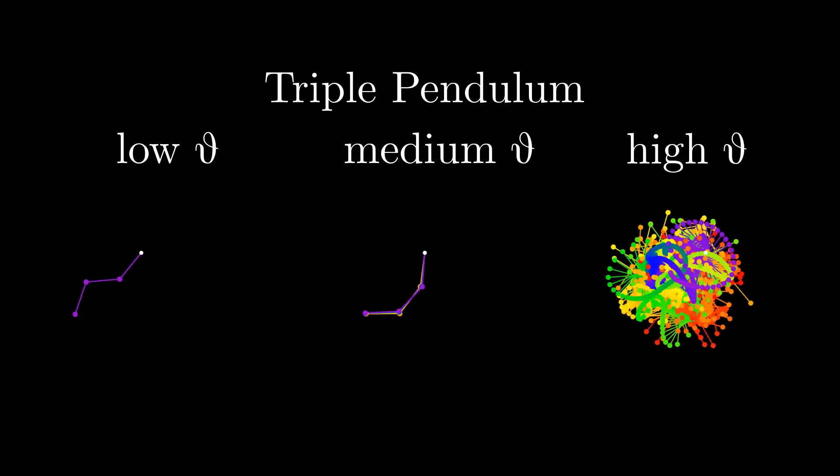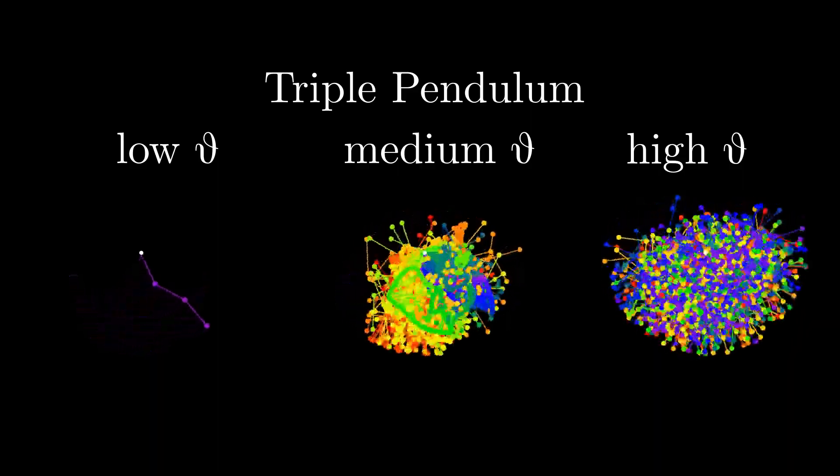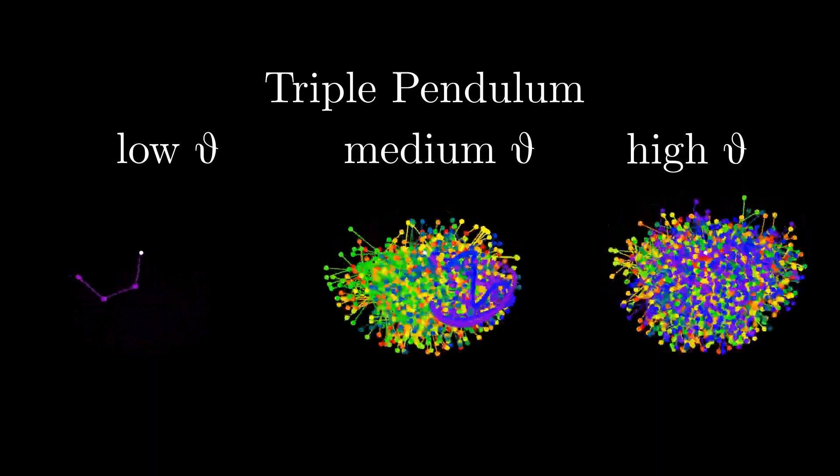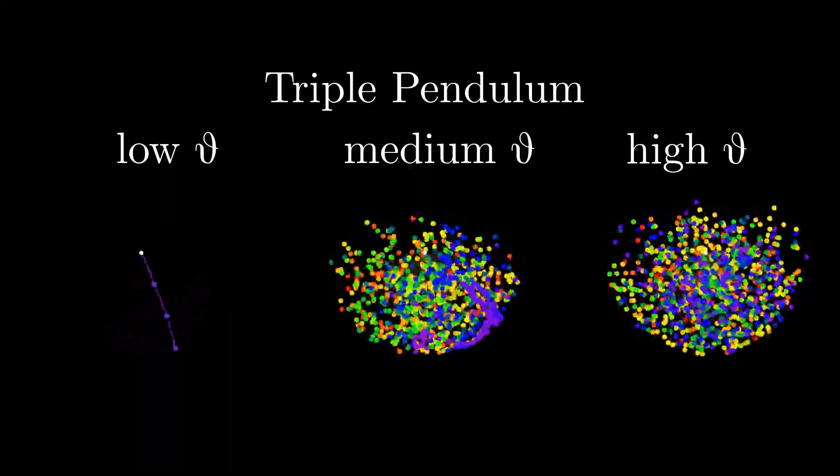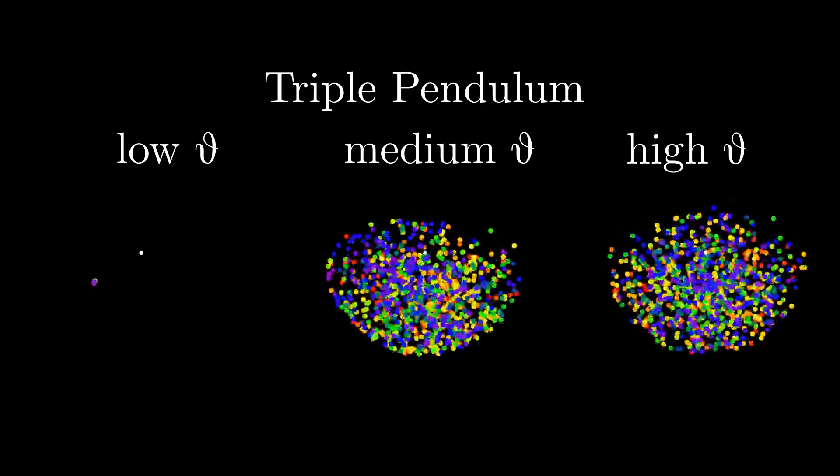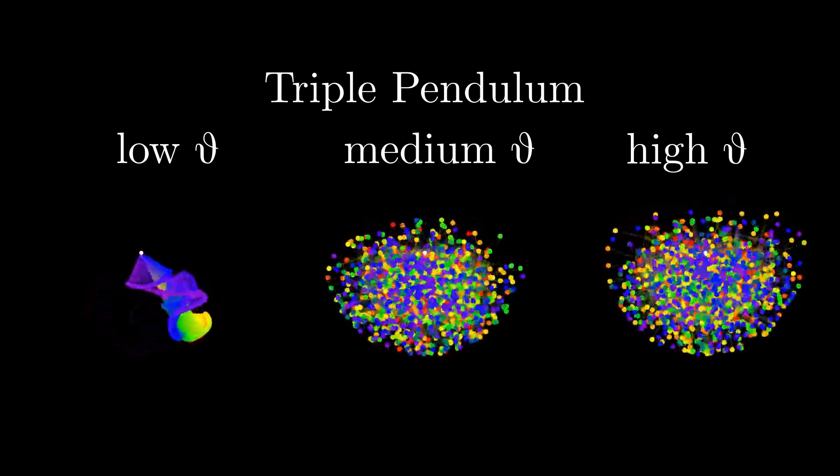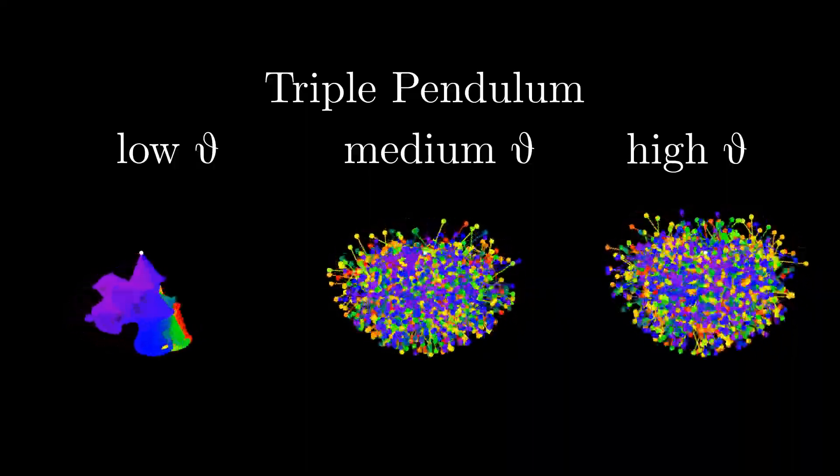The first pendulums to diverge are the ones with high energy. Shortly afterwards, the pendulums with the medium angles diverge. Then, for a time, nothing seems to happen with the low-energy pendulums. Until they also diverge.